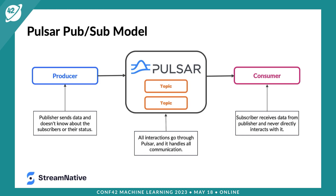Producers and consumers don't interact with one another directly. A producer connects to a Pulsar broker and publishes messages. These messages are stored on a topic, which is just a named channel between producers and consumers. Consumers can then, at their leisure, attach to the broker and consume messages from the topic asynchronously. They are completely decoupled, communicating asynchronously through a single endpoint — the Pulsar broker.